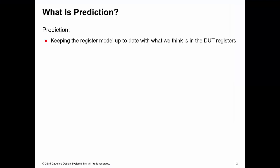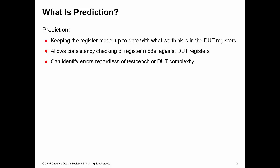Prediction is the art of keeping your register model up to date with what we think is happening inside of your DUT. We do this so that we can do consistency checking. We can check the expected results in our register model against the actual results in our DUT register. This is a very powerful way of detecting problems in your DUT or indeed with your register model, regardless of how complex your test bench or your DUT is.